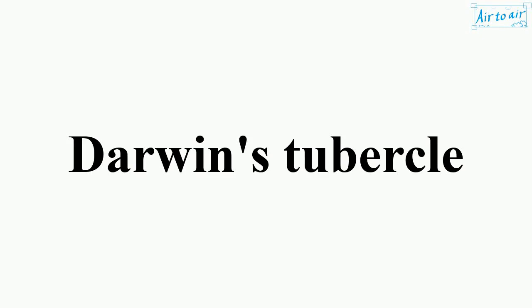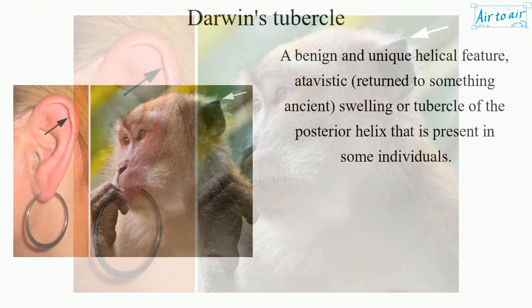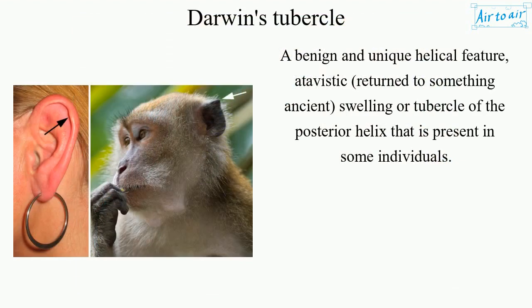Darwin's tubercle: a benign and unique helical feature, atavistic — returned to something ancient — a swelling or tubercle of the posterior helix that is present in some individuals.